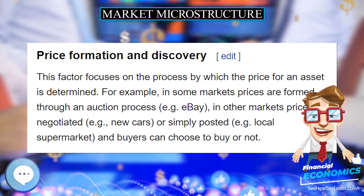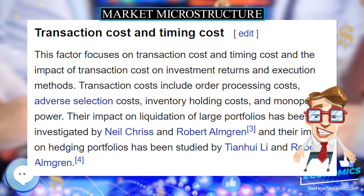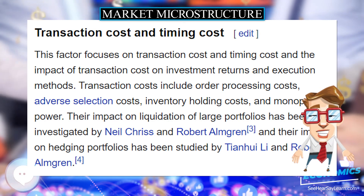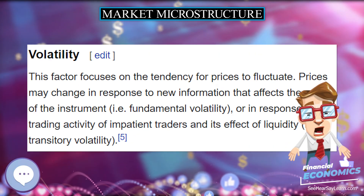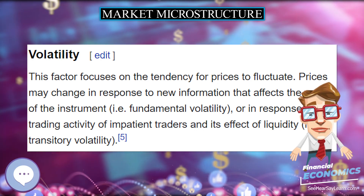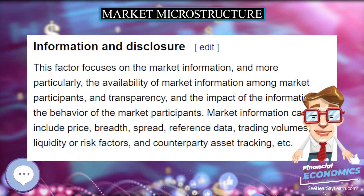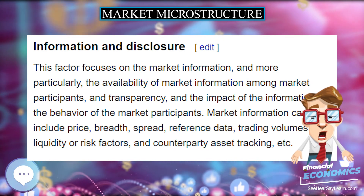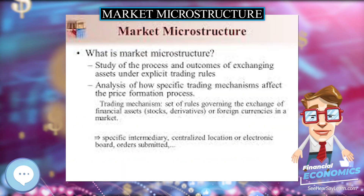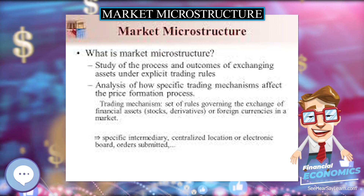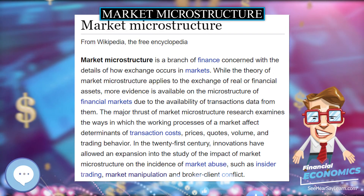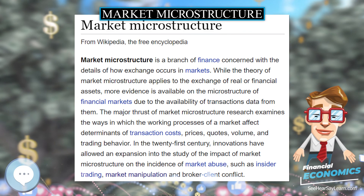Information and disclosure focuses on the availability of market information among market participants, transparency, and the impact of that information on the behavior of market participants. Market information can include price, breadth, spread, reference data, trading volumes, liquidity or risk factors, and counterparty asset tracking.